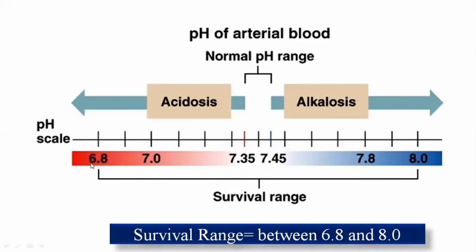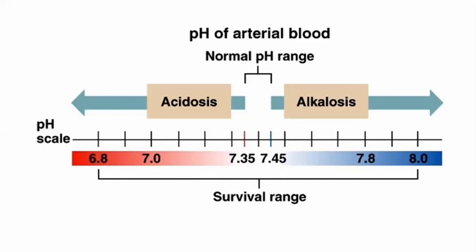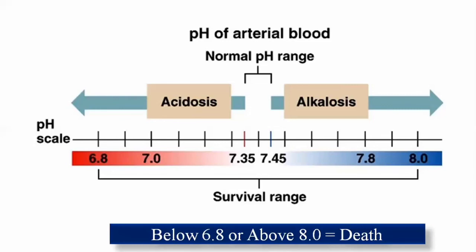If the pH goes below 6.8 — meaning increased concentration of hydrogen ion that the body cannot manage — or if it goes above 8.0 — with decreased concentration of hydrogen ion that the body cannot normalize — then below 6.8 and above 8.0 pH will lead to the death of the patient. Survival is not possible outside the range of 6.8 to 8.0.